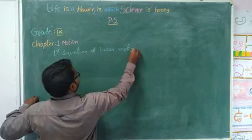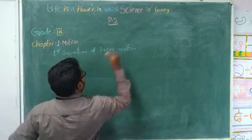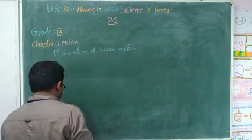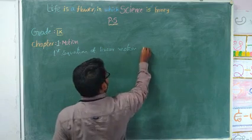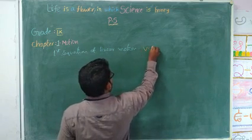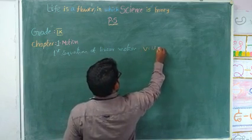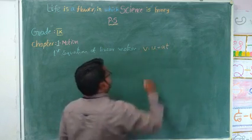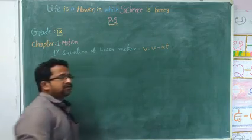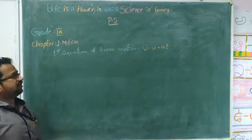What is the first equation of linear motion? V is equal to U plus AT.